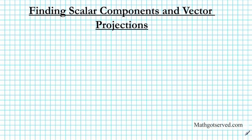Hey there students, in this clip we're going to be going over an example on how to compute the scalar components of two vectors, the scalar component of one vector in the direction of another, and the projection of a vector onto another vector. We're just going to be focusing on the mechanics and applying the procedures and formulas. If you want to know the previous derivation of these formulas, feel free to look at my previous videos.